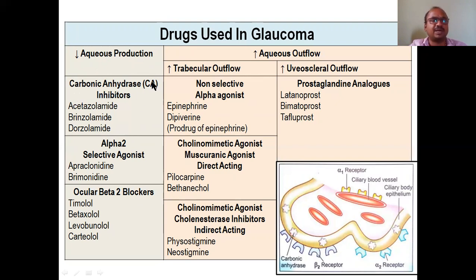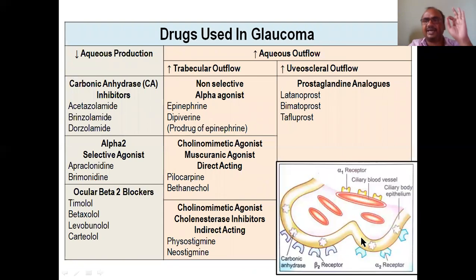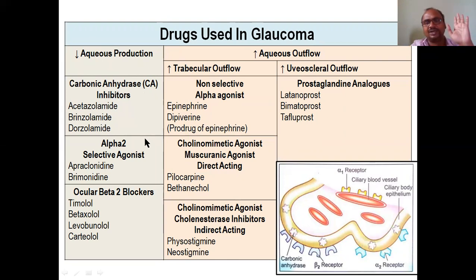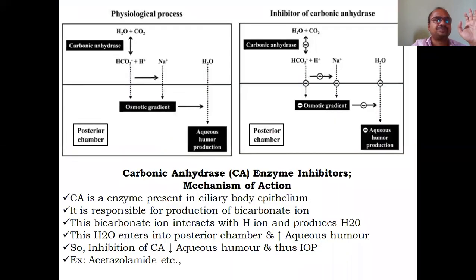For decreasing aqueous production, the key enzyme is carbonic anhydrase. This is the ciliary body — the ciliary epithelium contains star-like structures with the carbonic anhydrase enzyme. Carbonic anhydrase is responsible for the secretion of aqueous humor from the ciliary body. To reduce aqueous production, we must inhibit this enzyme.